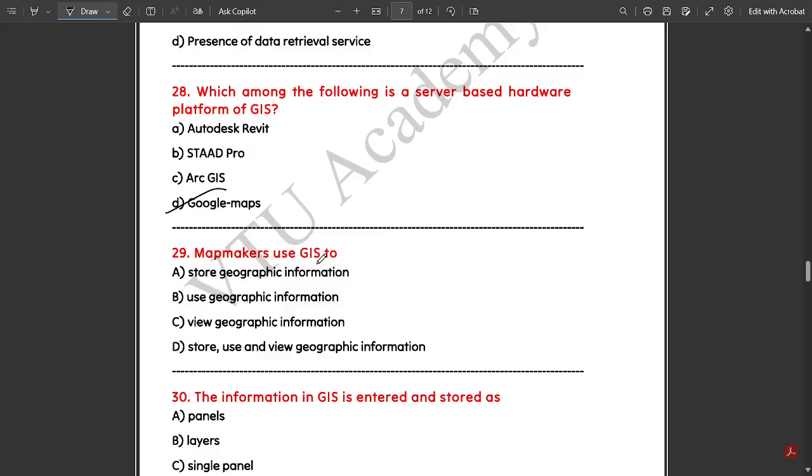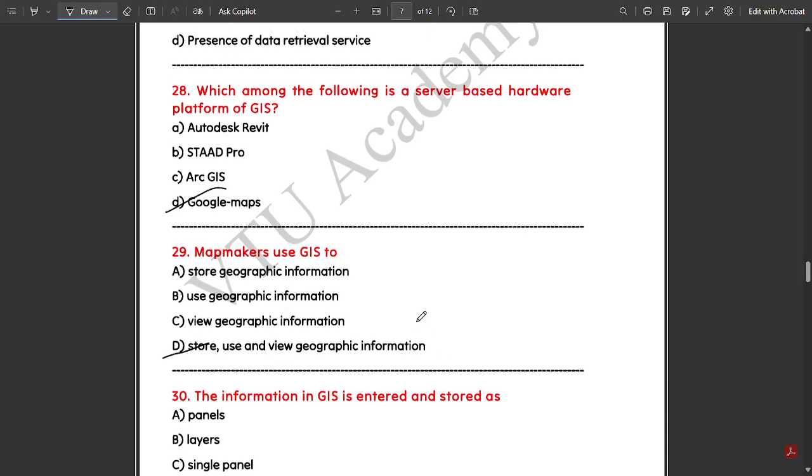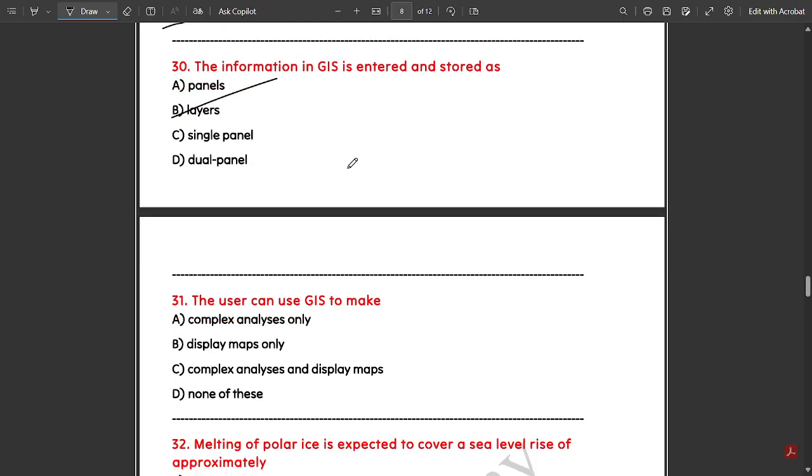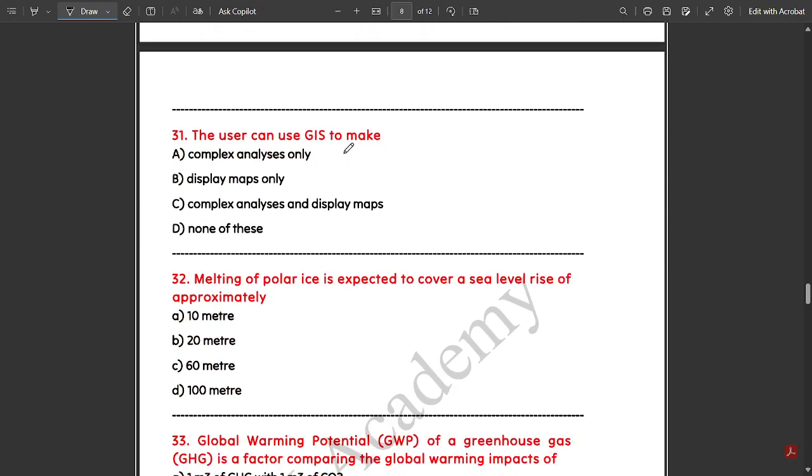Map makers use GIS to store, use, and view geographical information. The information in GIS is entered and stored as layers.